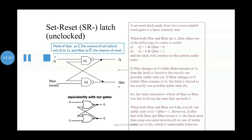If R bar changes to 0 while S bar remains at 1, the latch is forced to the exactly one possible state B. The latch remembers which of S bar and R bar was last 0 during the time they are both 1. When both S bar and R bar are 0, the exactly one stable state is Q equals Q bar equals 1. However, if after that both S bar and R bar return to 1, the latch must then jump non-deterministically to one of the stable states A or B, which is undesirable behavior.